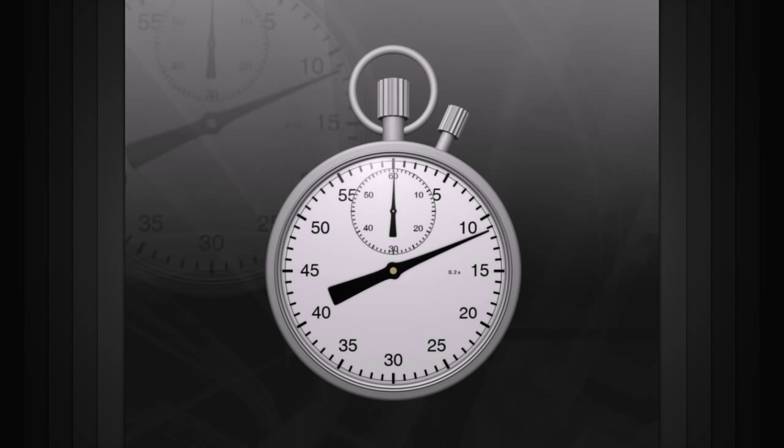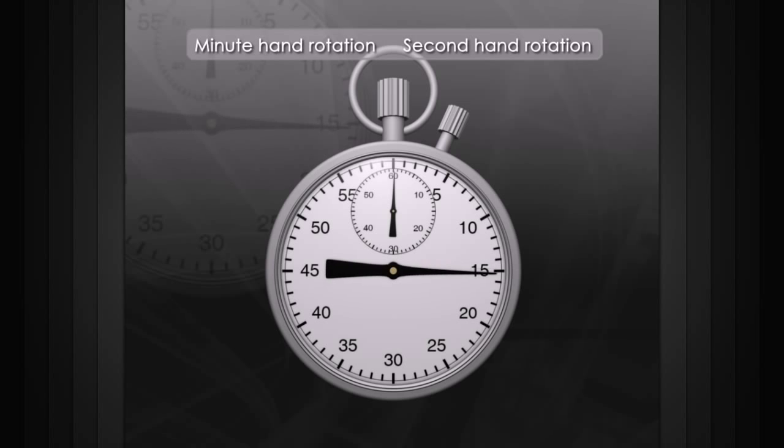So, we can connect the minute hand's rotation attribute to the second hand. We don't want a direct connection, because then they'll just rotate at the same speed. For every full revolution of the second hand, the minute hand needs to rotate 1/60th of a complete rotation.